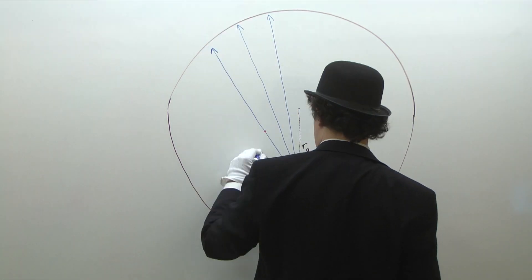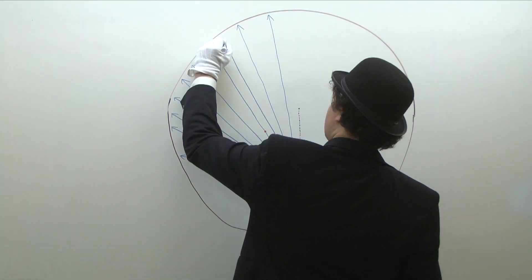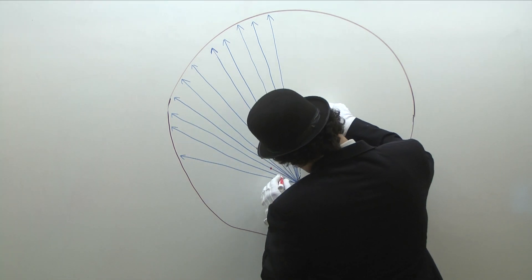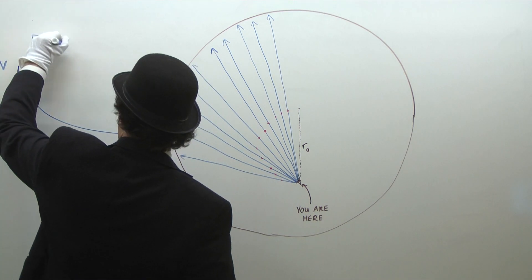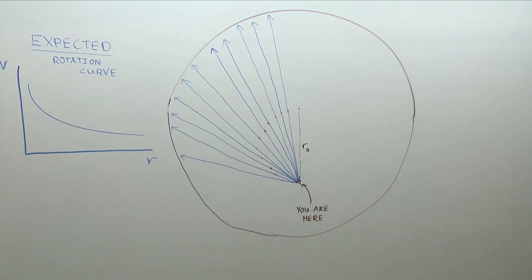The trick is to repeat this calculation for different lines of sight into the galaxy. Doing so allows you to create the graph of the rotation curve. Since we already have a model of what we're expecting the rotation curve to look like, let's scan through the galaxy with our radio telescope and find the actual rotation curve.